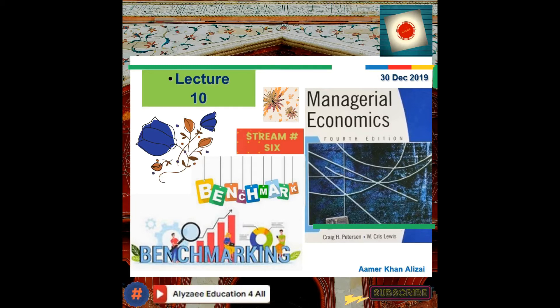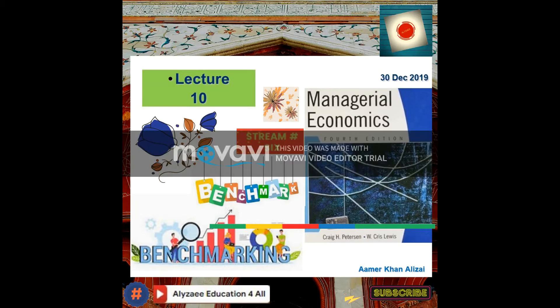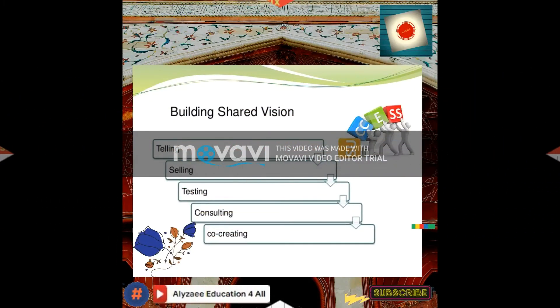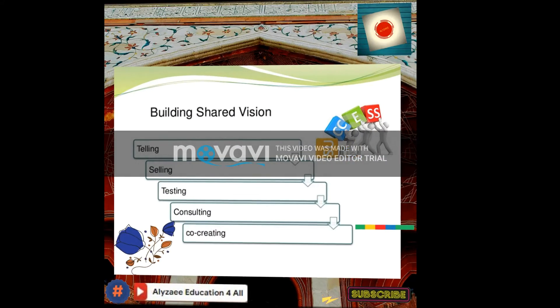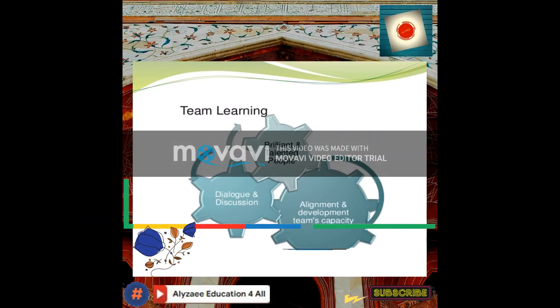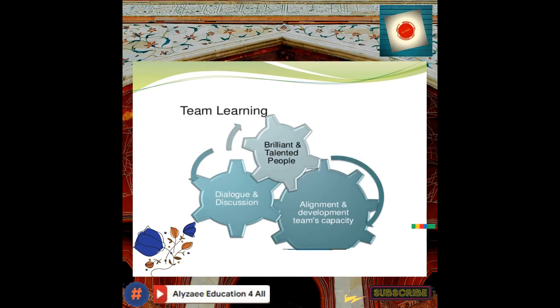For success, you have to look at building a shared vision — that is telling, selling, testing, consulting, and co-creating. For output, you have to look at team learning, and in team learning you have to look for brilliance — brilliant and talented people.